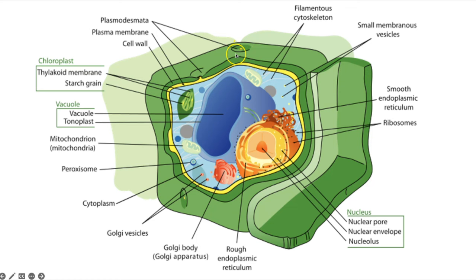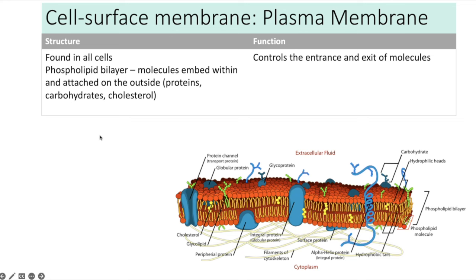Let's go through the structure and function of each organelle in more detail, starting with the cell surface membrane. Cell surface membranes are found in all cells and are made up of a phospholipid bilayer — two layers of phospholipid with hydrophilic heads on the outside and hydrophobic tails pointing inwards. Molecules such as proteins and cholesterol are also embedded within the bilayer.